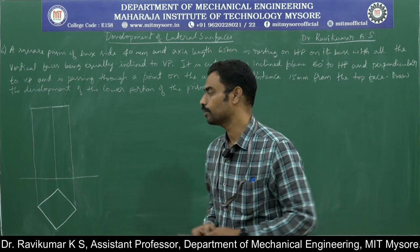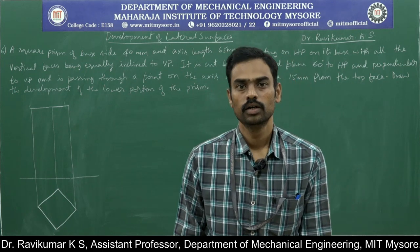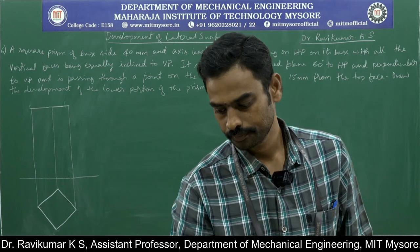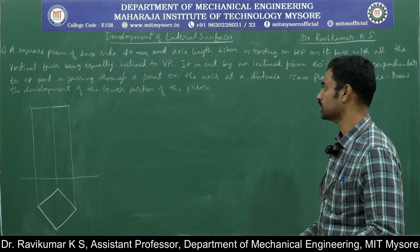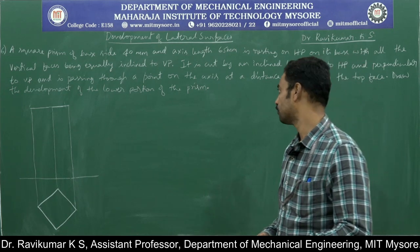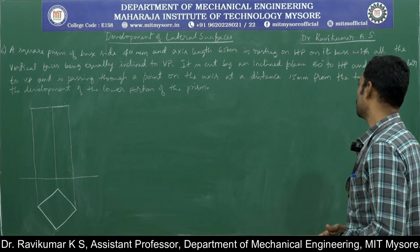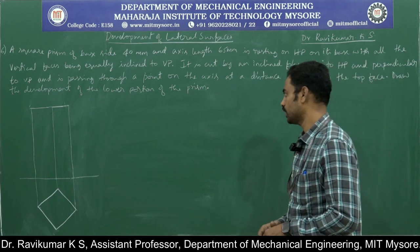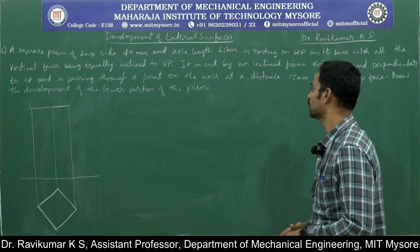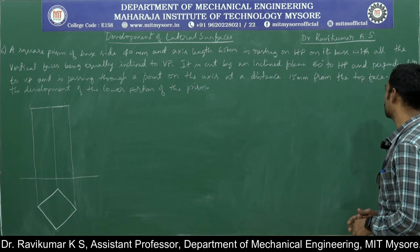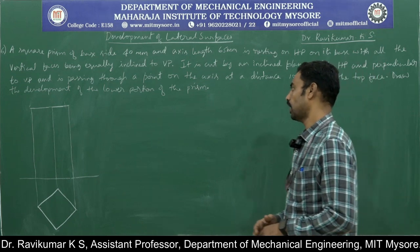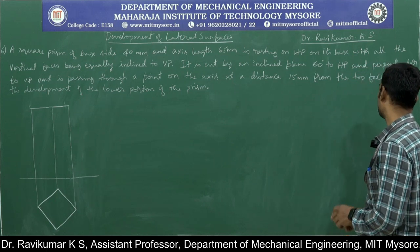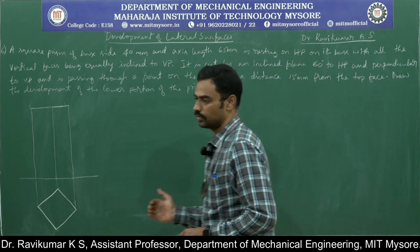Once you hear the name square prism, it should be solved using the parallel line method in the case of development. The problem goes like this: a square prism of base 40mm and axis length 65mm is resting on HP on one of its bases with all the vertical faces equally inclined to VP. It is cut by an inclined plane 60 degrees to HP and perpendicular to VP, passing through a point on the axis at a distance of 15mm from the top face. Draw the development of the lower portion of the prism.